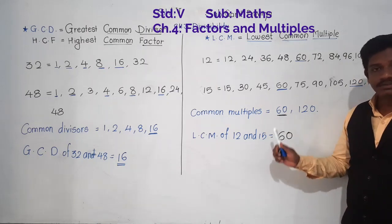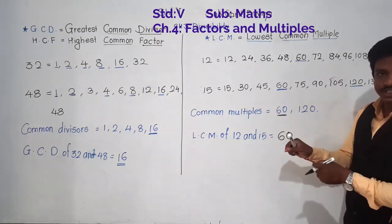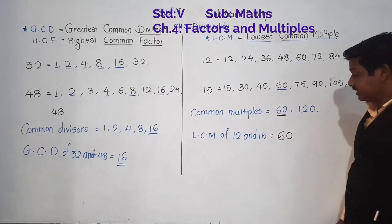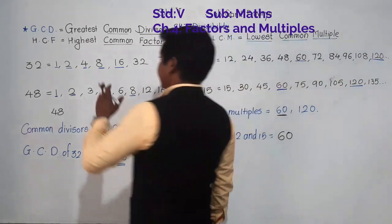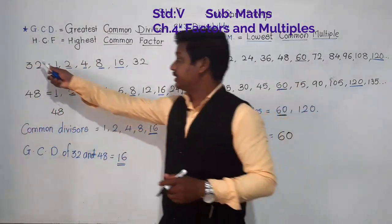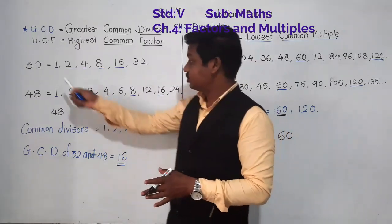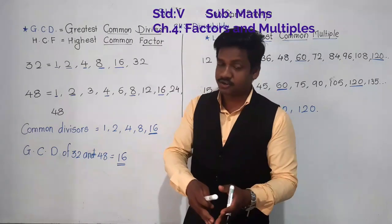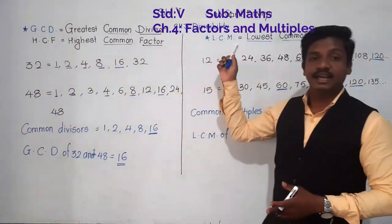LCM is the smallest number which is in the table of 12 as well as 15 — in the table of both given numbers. And GCD or HCF is the highest common factor — the highest divisor by which both given numbers are divisible. For example, 16 is the highest number by which both 32 and 48 are divisible: 16 twos are 32, 16 threes are 48. This is the concept of GCD or HCF and LCM.